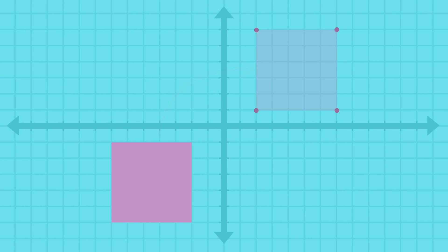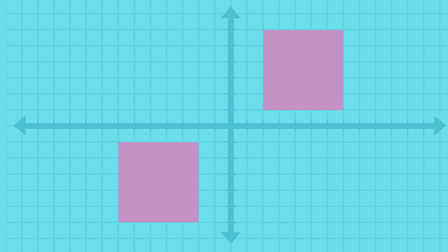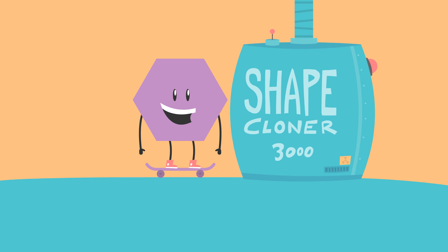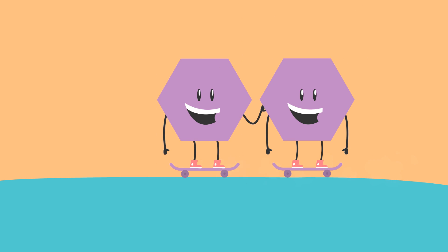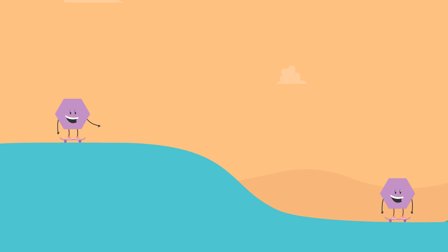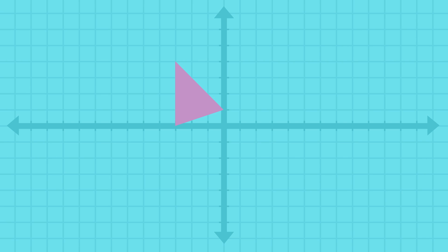Translation describes one way a geometric shape can move on a coordinate plane. When you translate a shape, it's like you make an exact copy of it and slide the copy to another spot. The shape stays the same. Here's how it works.